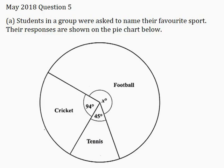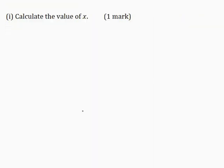In this video I'll be solving May 2018 question 5, part A. Students in a group were asked to name their favorite sport. Their responses are shown on the pie chart below. Part 1: Calculate the value of X for 1 mark.